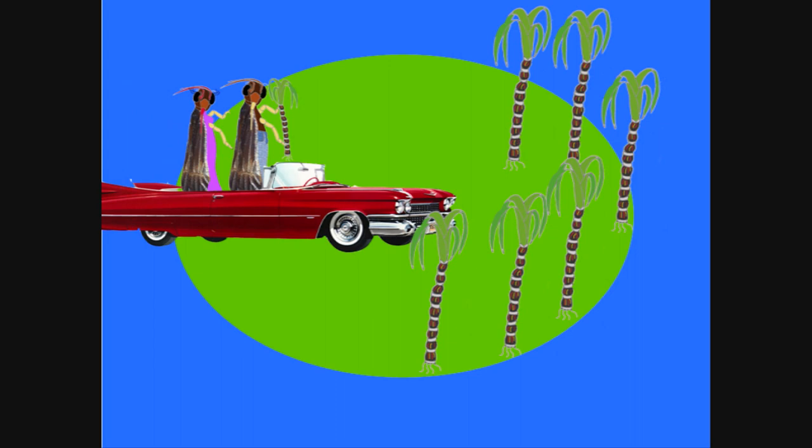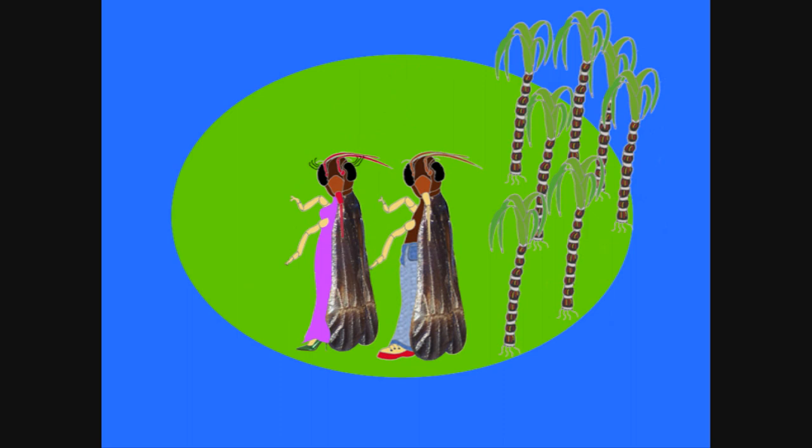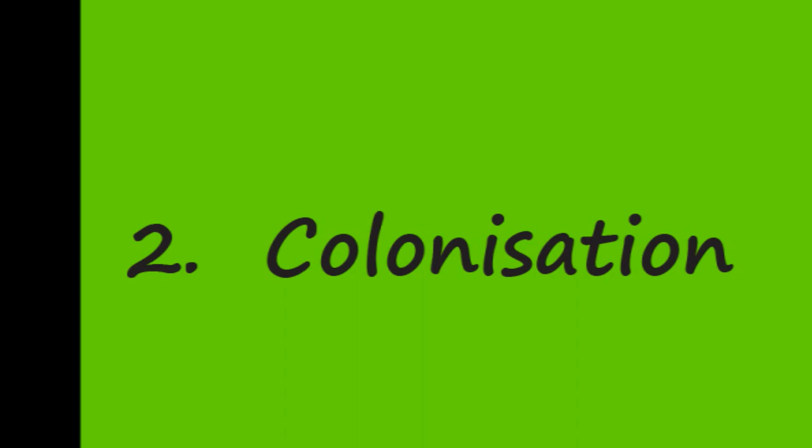Sometimes during a migration, the plant hoppers take a wrong turn and end up on an island where no plant hoppers have ever lived before. "Look at this place! I love it! Let's stay!" This is called colonisation.